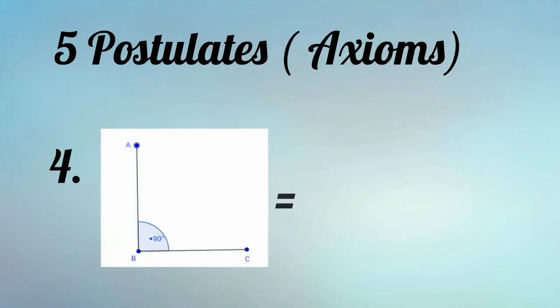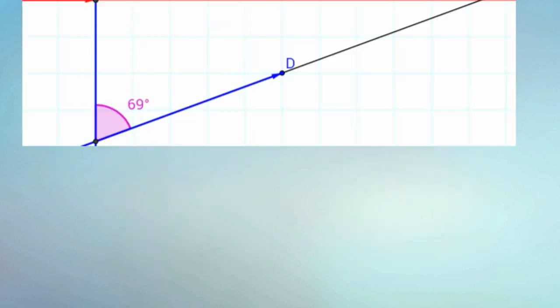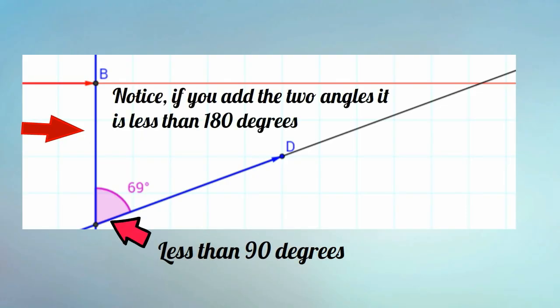4: All right angles are equal or congruent. And finally, if you have two straight lines and a third line crossing them, and the sum of the interior angle of the two lines is less than 90 degrees, then if you extend the lines they will eventually cross on that side.